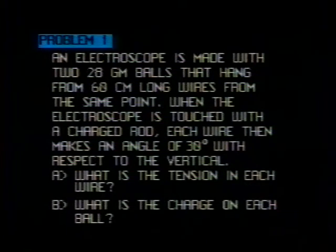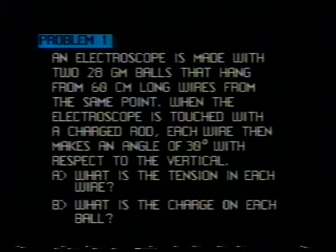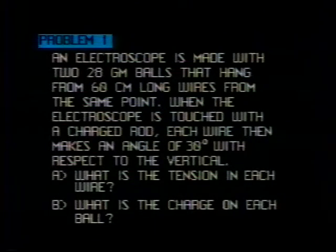The first problem reads: an electroscope is made with two 28 gram balls that hang from 60 centimeter long wires from the same point. When the electroscope is touched with a charged rod, each wire then makes an angle of 30 degrees with respect to the vertical. A, what is the tension in each wire? And B, what is the charge on each ball?